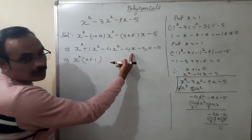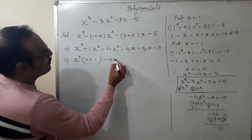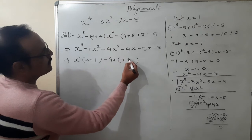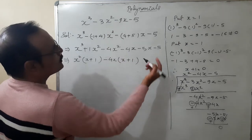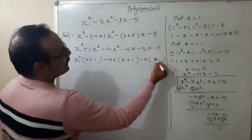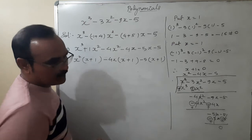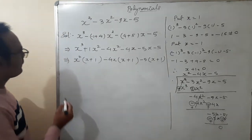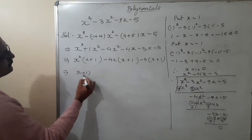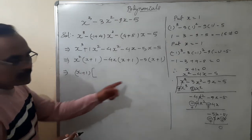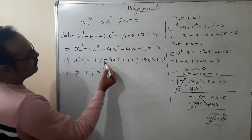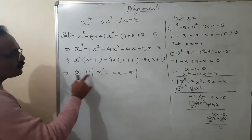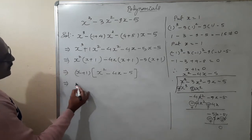Taking common from each pair: from first pair x² common gives x²(x plus 1); from middle pair taking minus 4x common gives minus 4x(x plus 1); from last pair taking minus 5 common gives minus 5(x plus 1). You can see inside each bracket we have x plus 1. Taking x plus 1 common, the remaining terms in the square bracket are x² minus 4x minus 5. So we get two factors: (x plus 1) and (x² minus 4x minus 5).